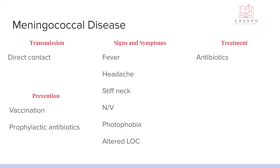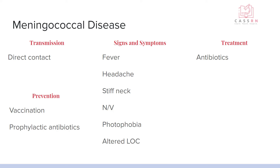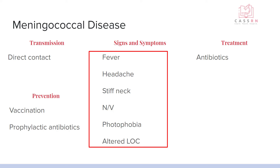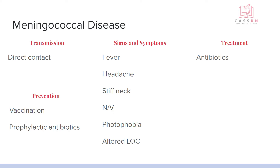Moving on to communicable diseases that are not STIs — meningococcal disease. This is also direct contact, but we have vaccines for it, and prophylactic antibiotics can also be given. People spread meningococcal bacteria by sharing respiratory and throat secretions like saliva, which generally takes close or lengthy contact such as coughing and kissing. It usually spreads between roommates, people in the same house, or close partners. Symptoms include fever, headaches, stiff neck, nausea and vomiting, sensitivity to light, and possibly altered level of consciousness. It's treated with antibiotics, but it's important to treat it quickly because it can have long-term effects.